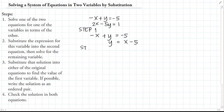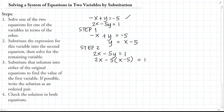Step 2: we substitute the expression for this variable into the second equation — the equation we did not use in Step 1. Using the second equation, 2X minus 5Y equals 1, we substitute Y equals X minus 5. So instead of writing Y, we replace it with X minus 5, giving us 2X minus 5 times (X minus 5) equals 1.